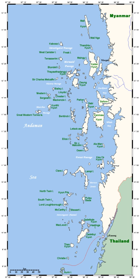An archipelago, sometimes called an island group or island chain, is a chain, cluster or collection of islands, or sometimes a sea containing a small number of scattered islands.